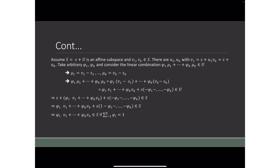From the definition, μ₁ equals v₁ minus s, μ₂ equals v₂ minus s, and so on until μₖ equals vₖ minus s. Therefore, the combination φ₁μ₁ plus φ₂μ₂ and so on until φₖμₖ is equivalently equal to φ₁(v₁ minus s) plus all corresponding terms until φₖ(vₖ minus sₖ).